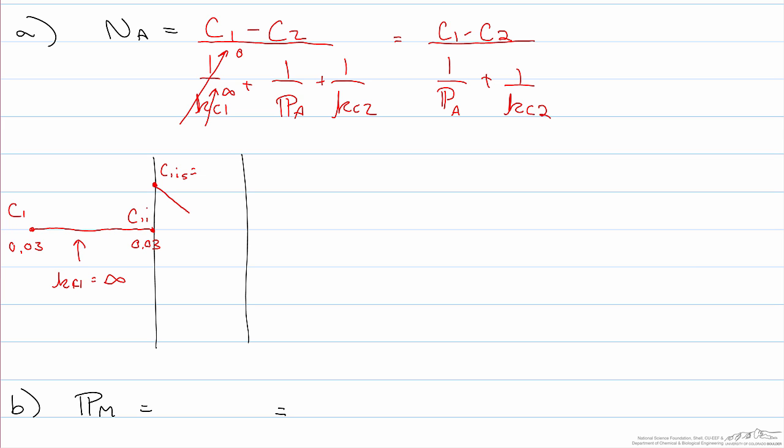And then assuming Fickian diffusion we have a linear concentration gradient across the membrane, then a relationship between c2is and c2i at the interface. Again because the equilibrium constant is greater than 1, the concentration drops from the membrane surface to the fluid phase that it's in contact with. And then again we'll have a decrease in concentration here. This one does not have an infinite mass transfer coefficient and so this concentration will drop. We don't know these numbers yet but this is a rough sketch of what the compositions are going to look like.